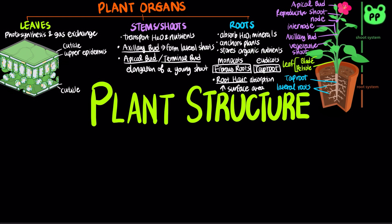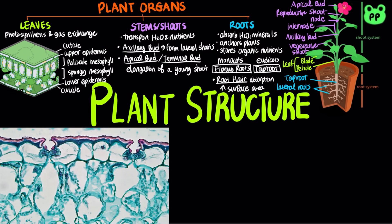Below the cuticle are dermal tissues known as the epidermis, and ground tissue known as mesophyll is sandwiched between the upper and lower epidermis. The mesophyll is further divided into an upper part known as the palisade mesophyll, and a lower part known as the spongy mesophyll where gas exchange occurs. The epidermis in leaves is interrupted by stomata, which allow carbon dioxide exchange between the air and photosynthetic cells in the leaf. Each stomatal pore is flanked by two guard cells, which regulate its opening and closing.